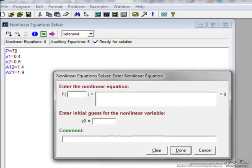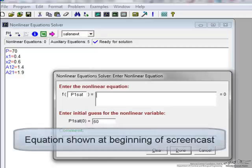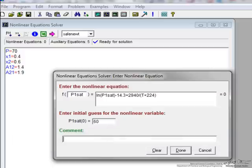One of my variables, let's pick P1SAT, let's say my initial guess for that is 60, and then the equation, I will just copy, and if I want to put a comment like this is the vapor pressure for component one, I can do so.